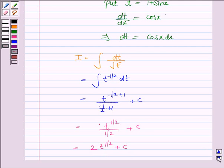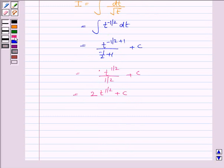Now t is equal to 1 plus sin x. So put t equal to 1 plus sin x. So this becomes 2 into 1 plus sin x to the power 1 by 2 plus c.